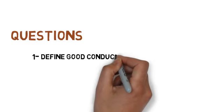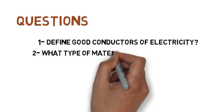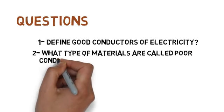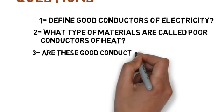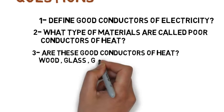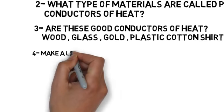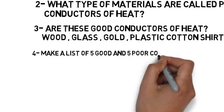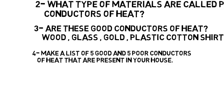Question one: define good conductors of heat. Question two: what type of materials are called poor conductors of heat? Question three: are these good or bad conductors of heat — wood, glass, gold, plastic, and a cotton shirt? Question four: make a list of five good and five poor conductors of heat present in your house, recorded in the form of columns.